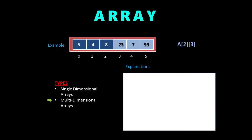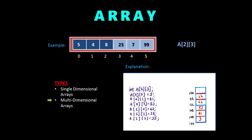The next type is multi-dimensional arrays, which can be thought of as arrays inside another array. In this example, the '2' represents the first dimension and the '3' represents the second dimension. It basically means there are two blocks of memory, and in each block there are three sub-blocks. We can see that there are six blocks of memory allocated for this array — two broad blocks each containing three sub-blocks.